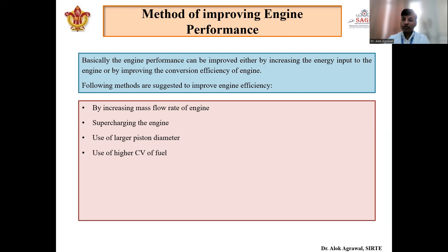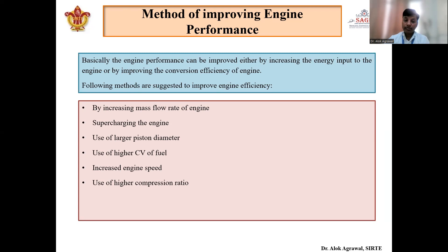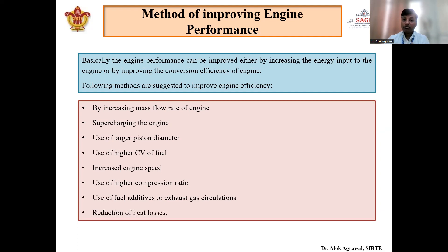If we use high quality fuel with a higher calorific value, the engine performance will definitely improve. With an increase in engine speed we can also increase power output. For increasing thermal efficiency and power output we can use a high compression ratio, but we have seen that increasing compression ratio leads to frictional losses or detonation. Use of fuel additives or exhaust gas recirculation via turbocharging can help utilize otherwise wasted energy. Importantly, reducing heat losses in the engine will also increase power output.